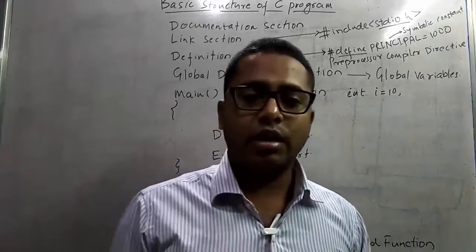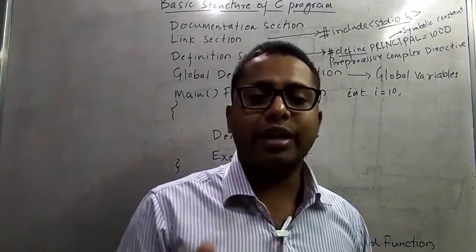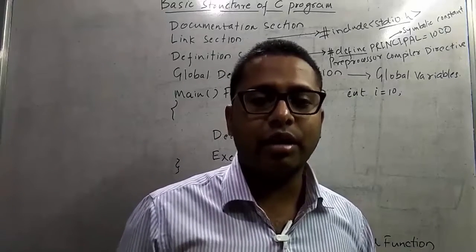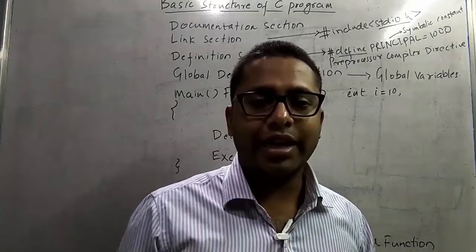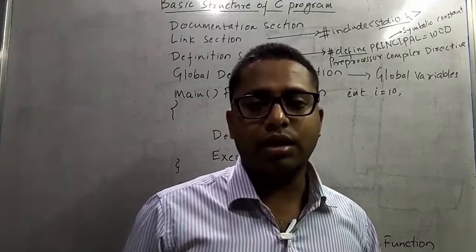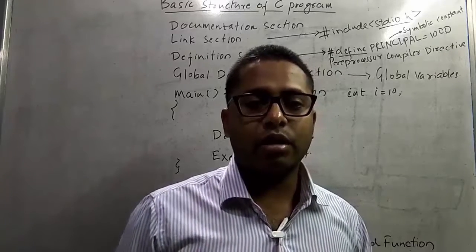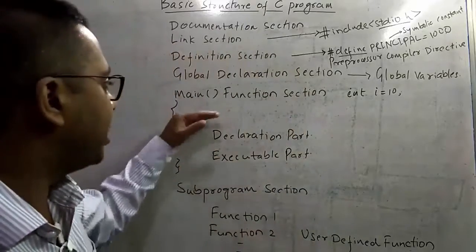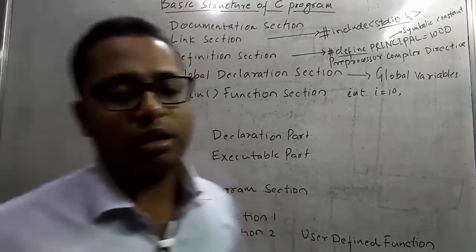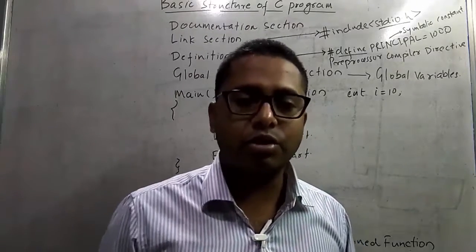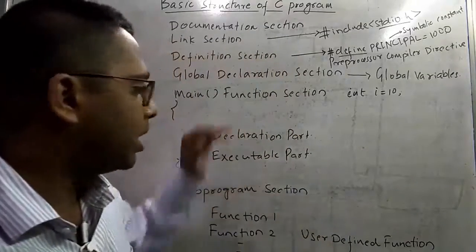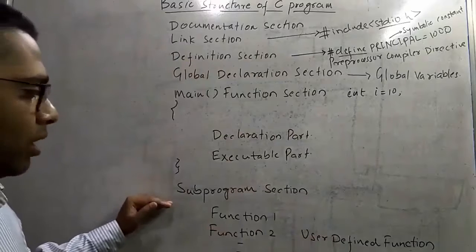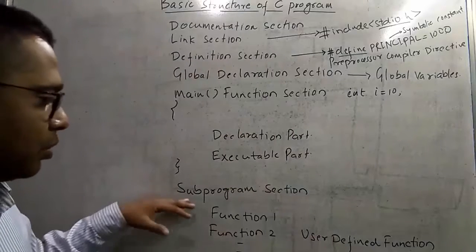The main function contains a declaration part and an executable part. Inside the declaration part we can declare variables of different data types, like int i or float d. Inside the executable part, all the executable statements can also be written inside the main function.